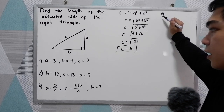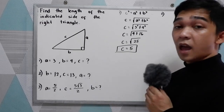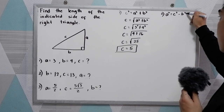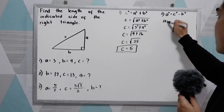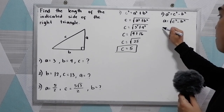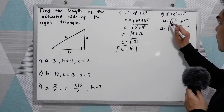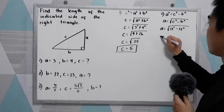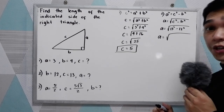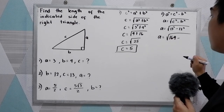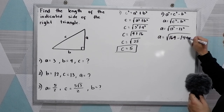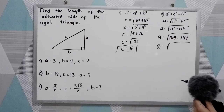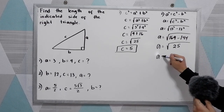Number 2: b equals 12, c equals 13, and a is unknown. The formula is a squared equals c squared minus b squared. Extracting the square root: a equals the square root of c squared minus b squared. So a equals the square root of 13 squared minus 12 squared — that is the square root of 169 minus 144, which is the square root of 25. So a equals 5.